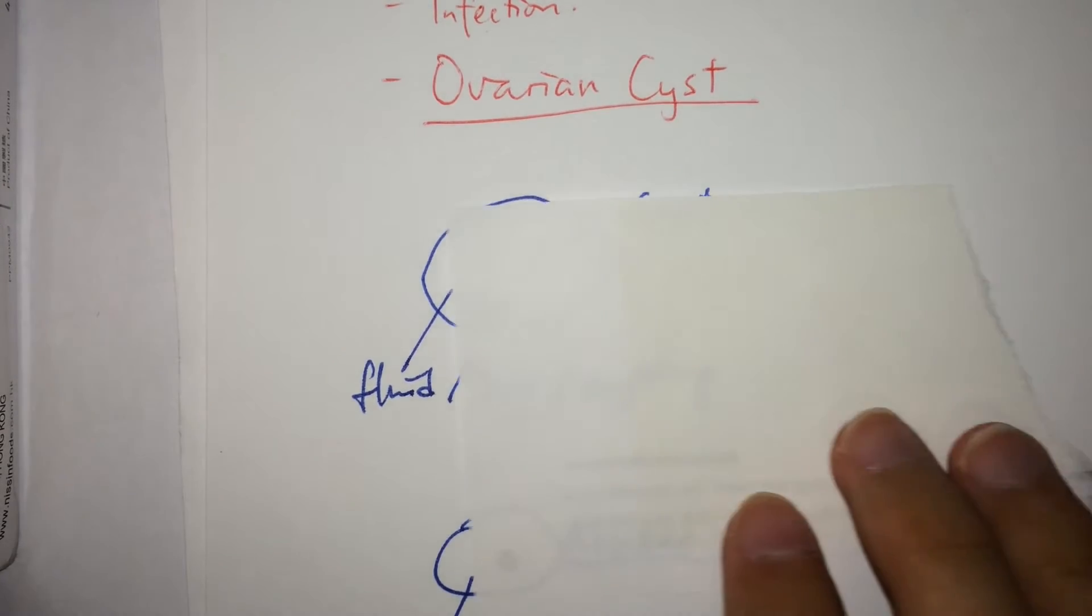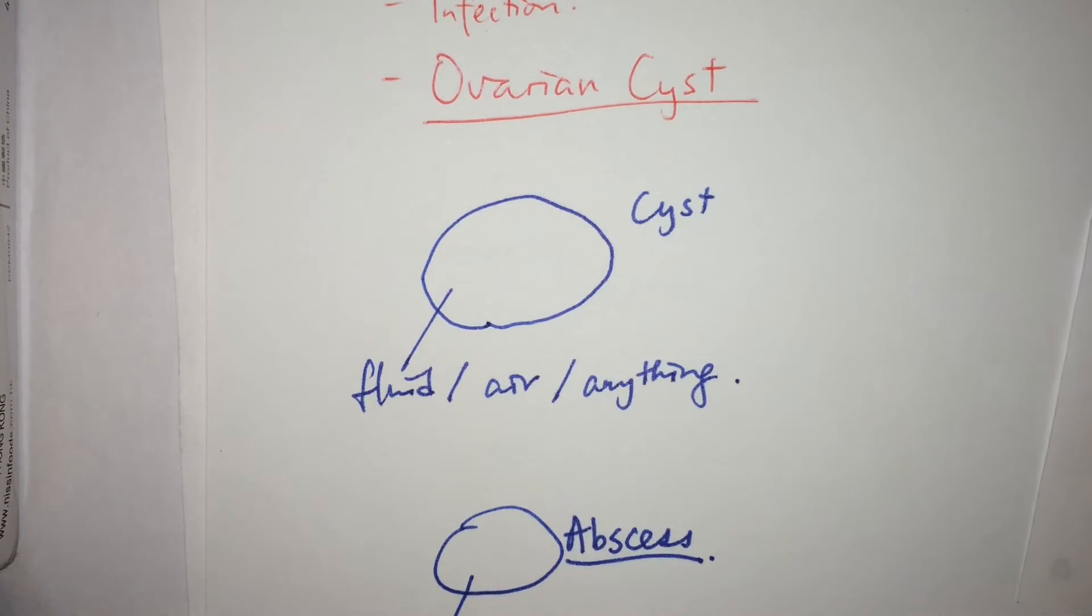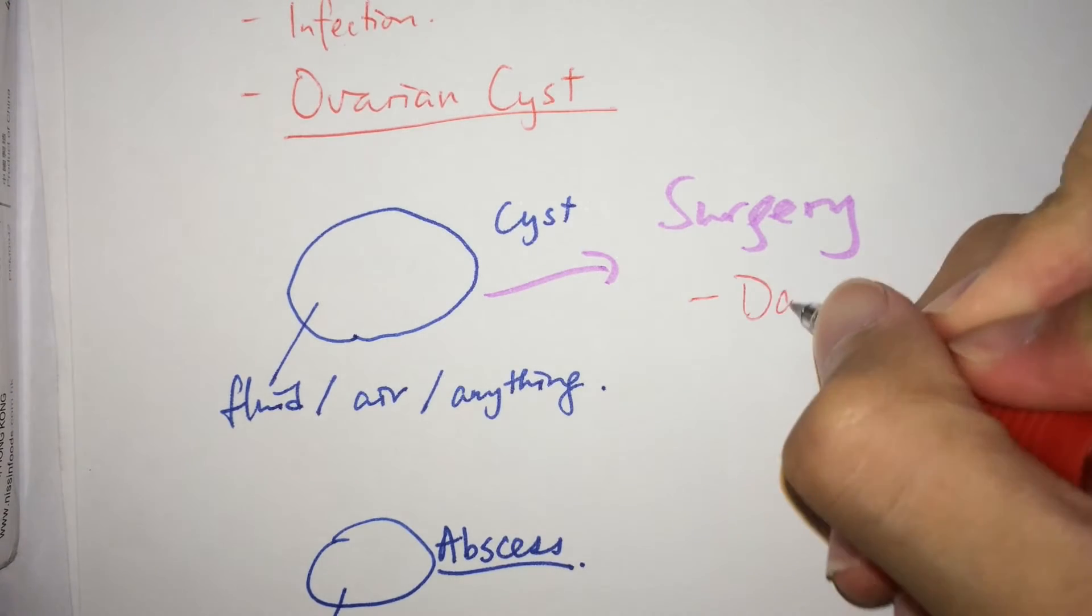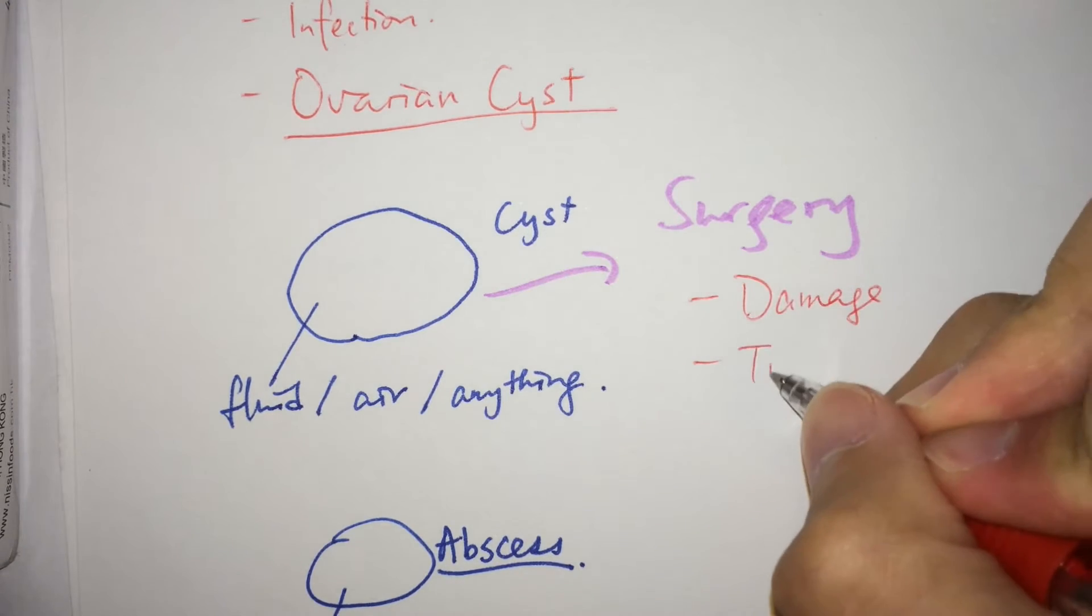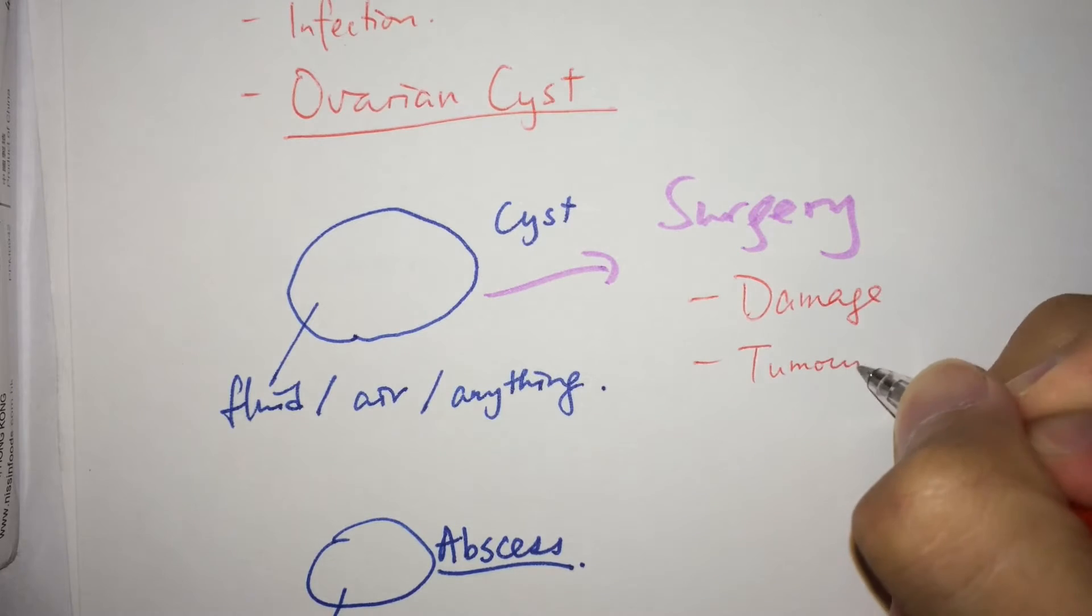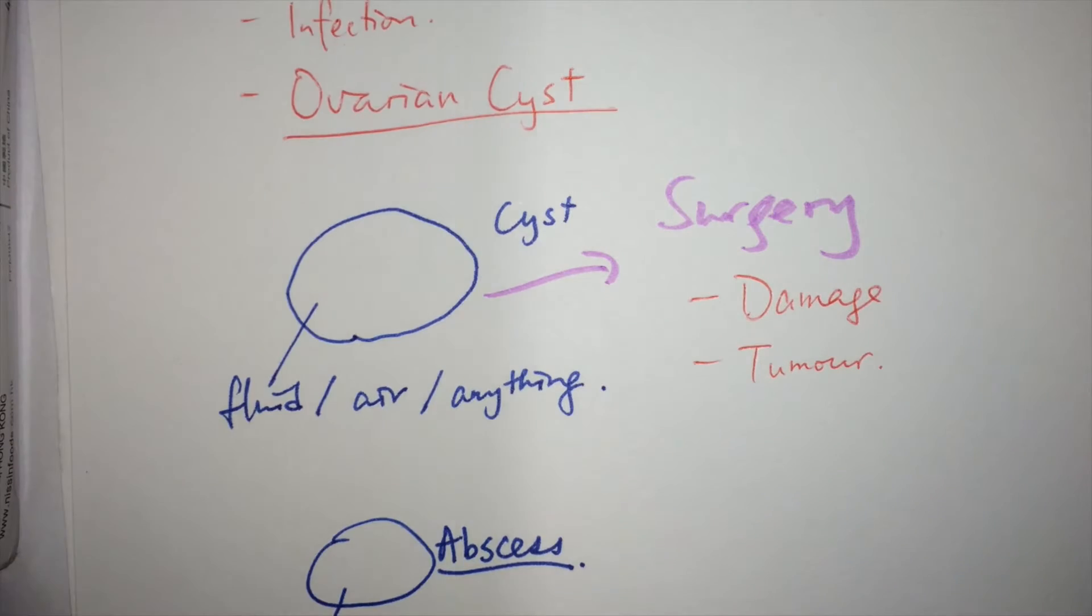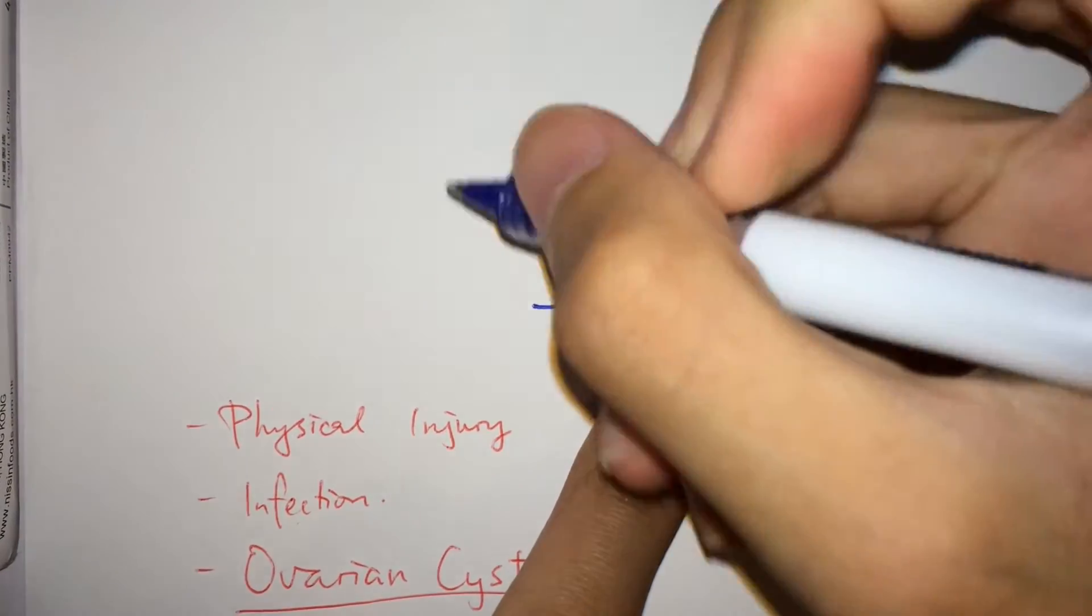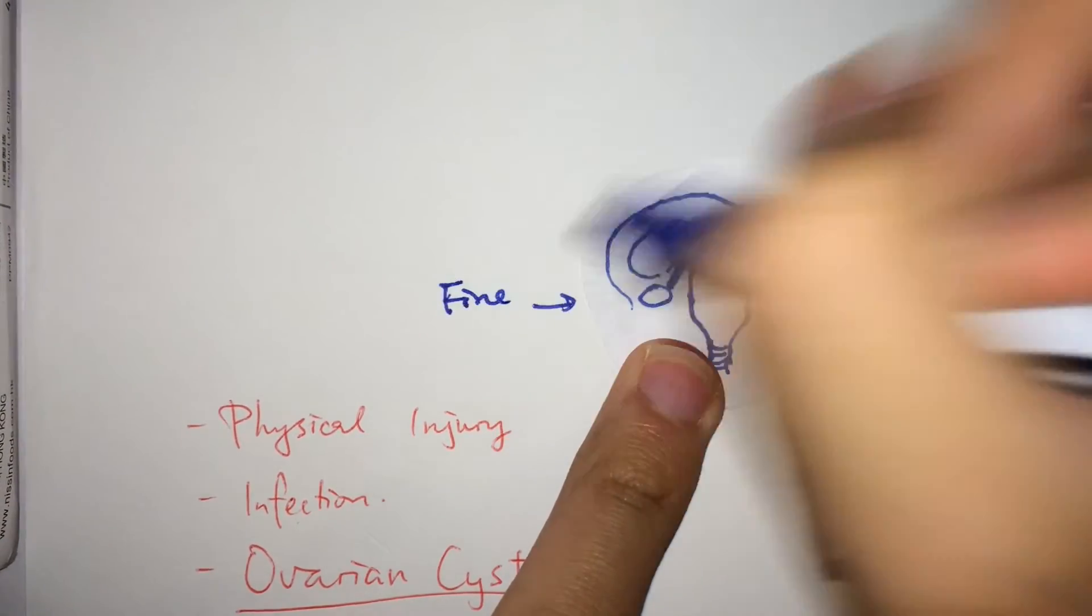Normally, a cyst would resolve itself, but if it does not, you might need to seek surgery as it could cause damage to nearby tissue or even develop into a tumor, though not common as most cysts stay benign. In all those situations, it's relatively uncommon to have both ovaries disabled.